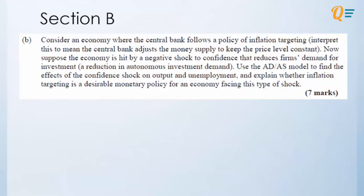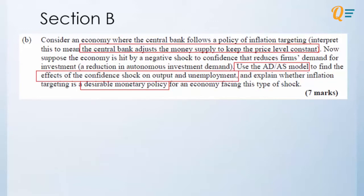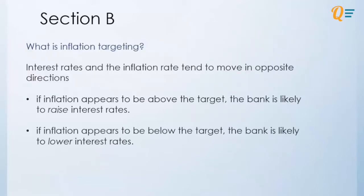So perhaps something that reduces the impact of your confidence shock. So let's say it decreases output, we want to have a policy that pushes output back to where it was previously. So these are the key points that we should note. Using ADAS model only, the effect of a confidence shock on output and unemployment. So now to give a background information about what is our inflation targeting. So we normally know that interest rates and inflation rates tend to move in opposite directions. So if inflation is above the target.